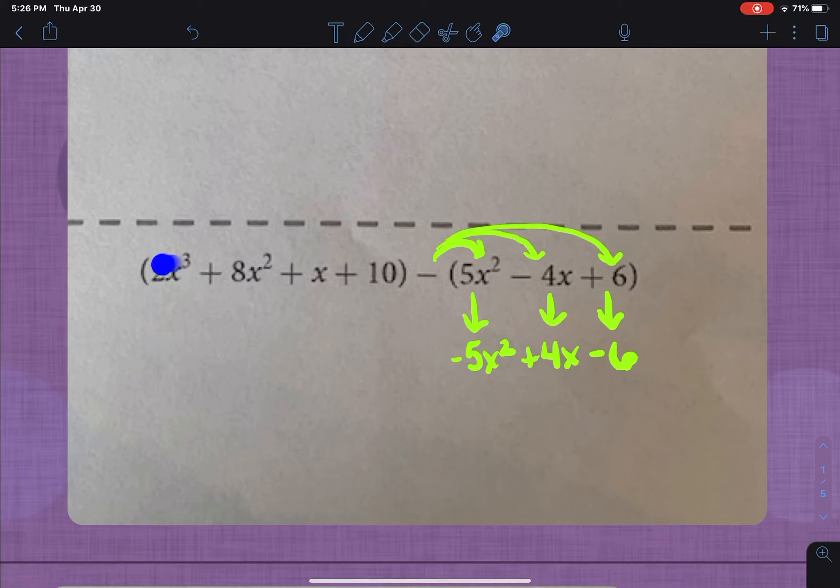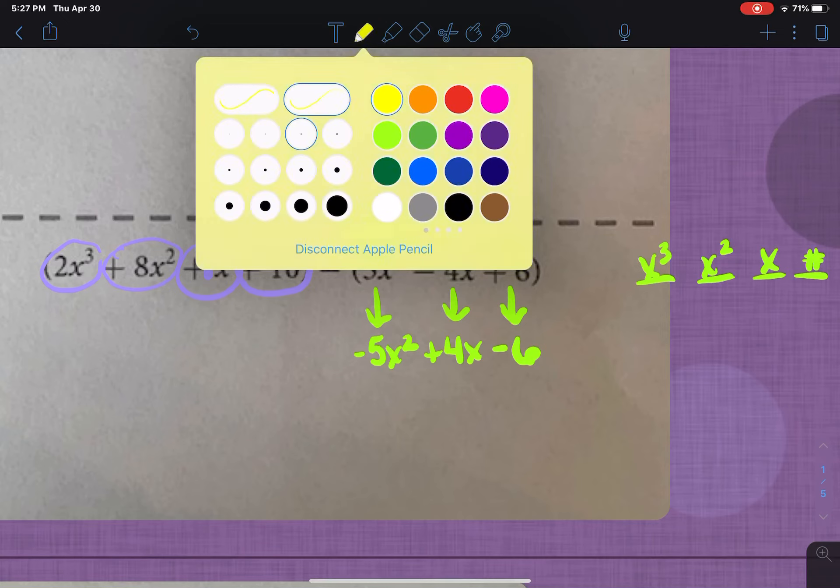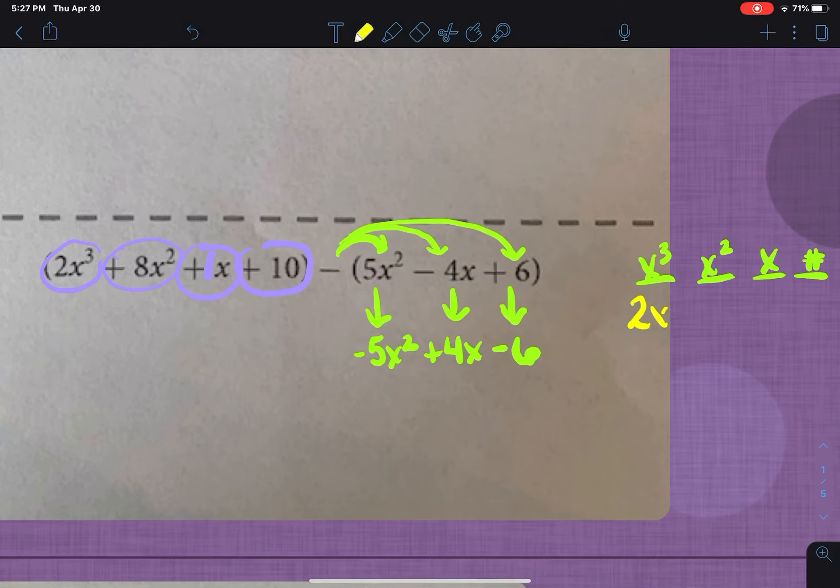Now to make my columns, I have to look at this and this. So that means I have the highest exponent I have is 3. So x to the third, x squared, x, and my number. And then I'm going to start to take it and sort my pieces. So we're going to sort these four pieces first. I am going to add a 1 there. So if I start to go through and sort now, it's going to be 2x to the third plus 8x squared plus 1x plus 10.